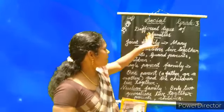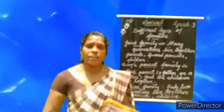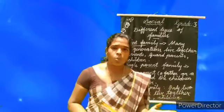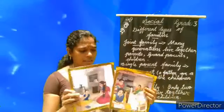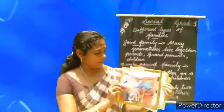Now you know which type of family is your family. What is the difference between these different types of families? Joint family is a big family — more members are there. Single parent family and nuclear family are small families — less members are there.